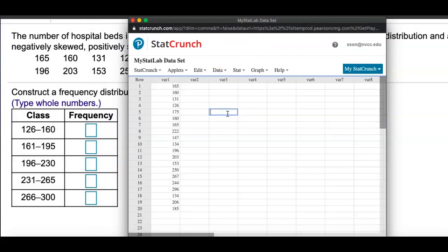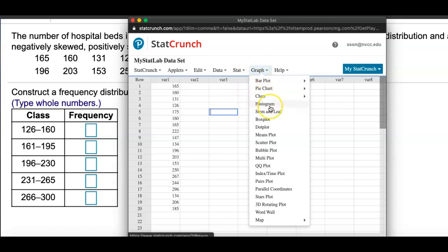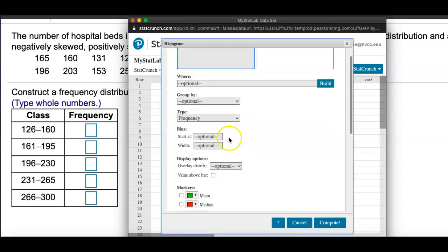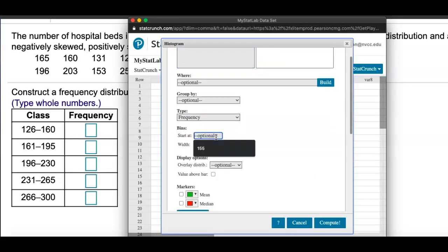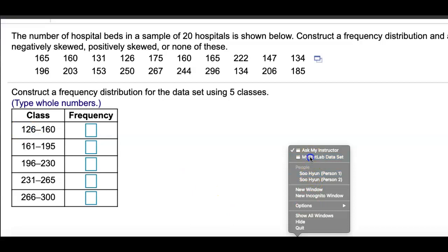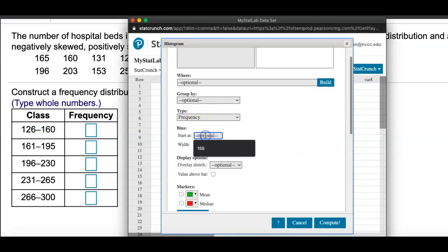I will go and create a histogram. So go to graph, histogram, click on bar 1, that's where we have all those numbers saved, and come down here and tell the bins to start at 126. I'm going to go ahead and tell this to start at 126.